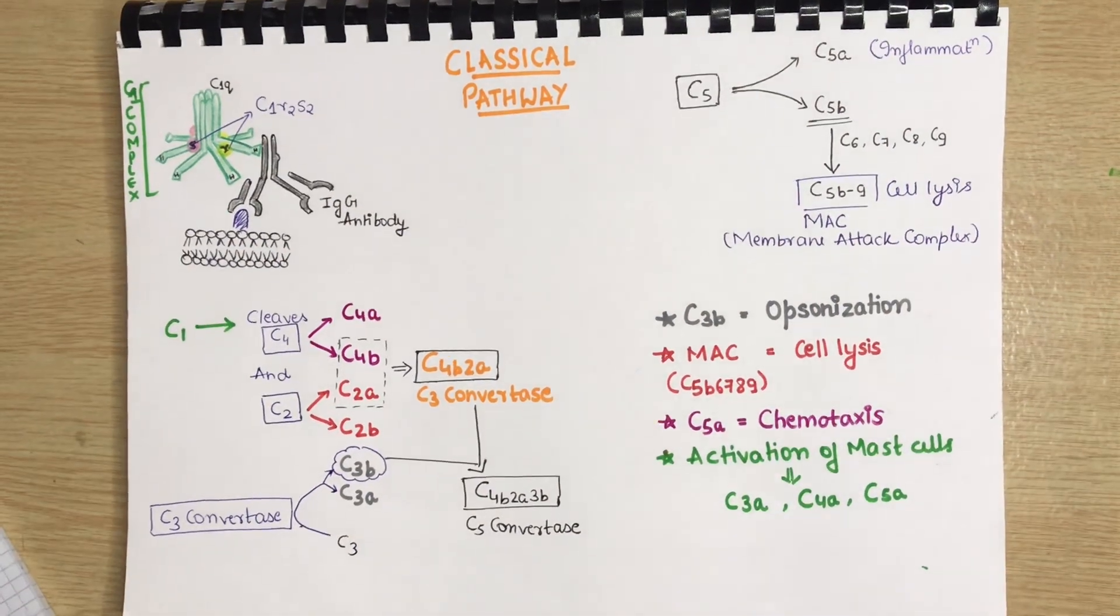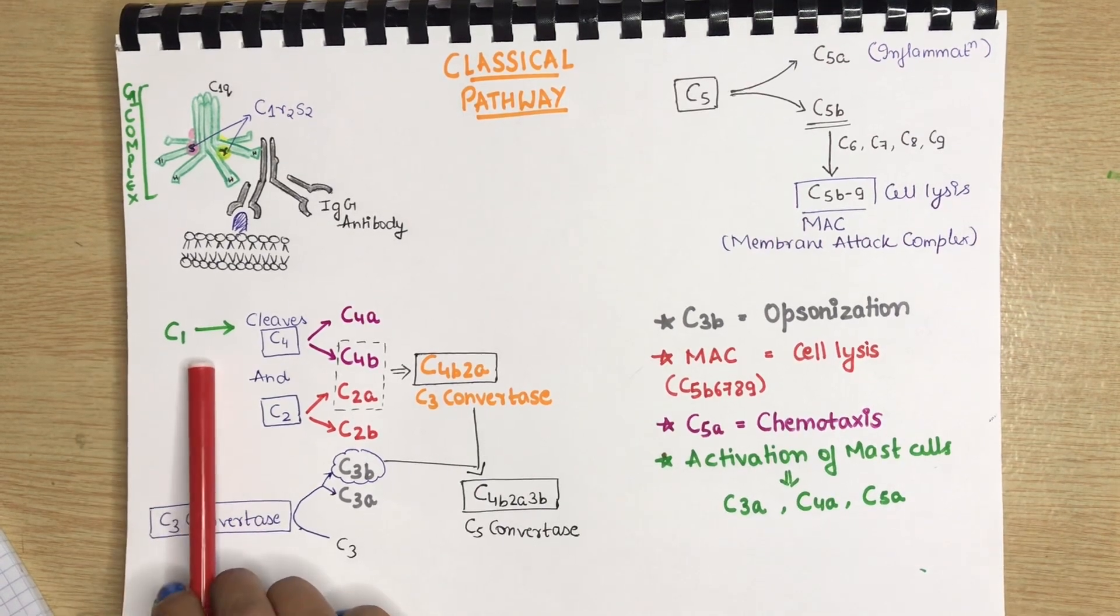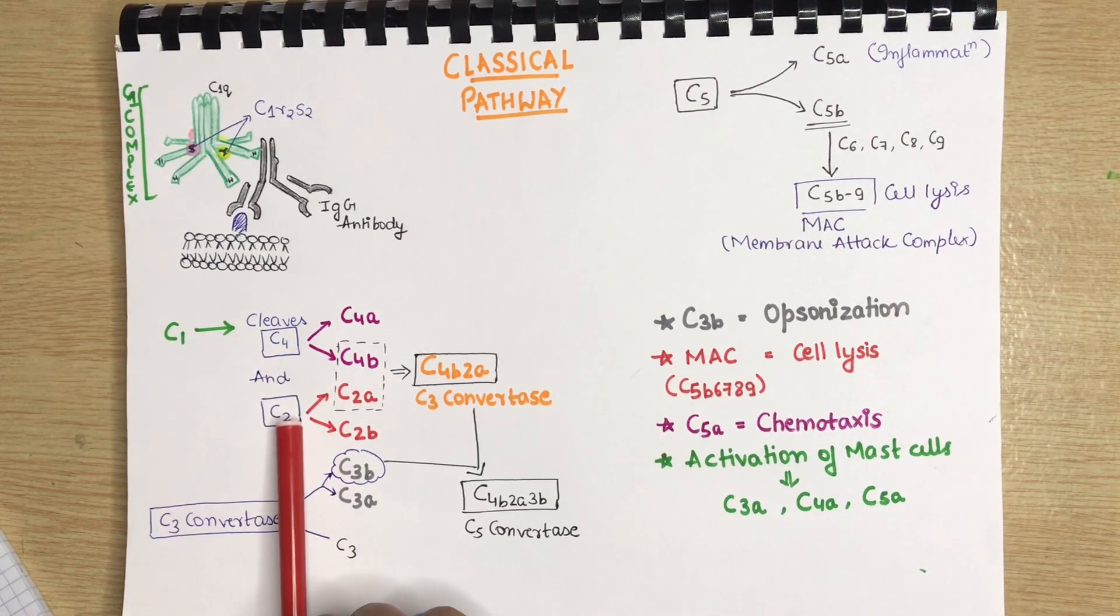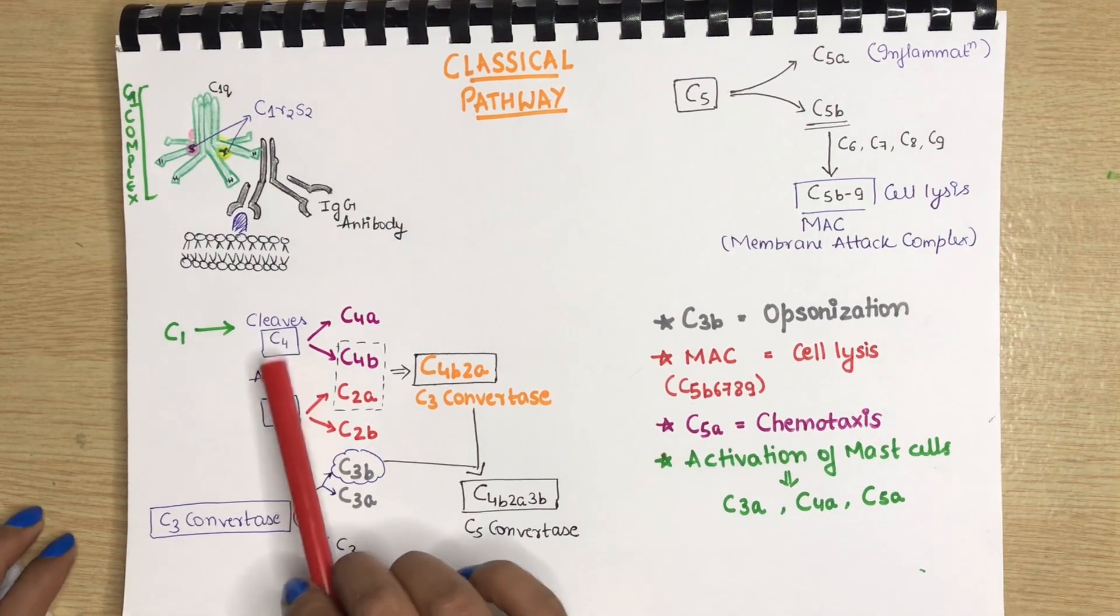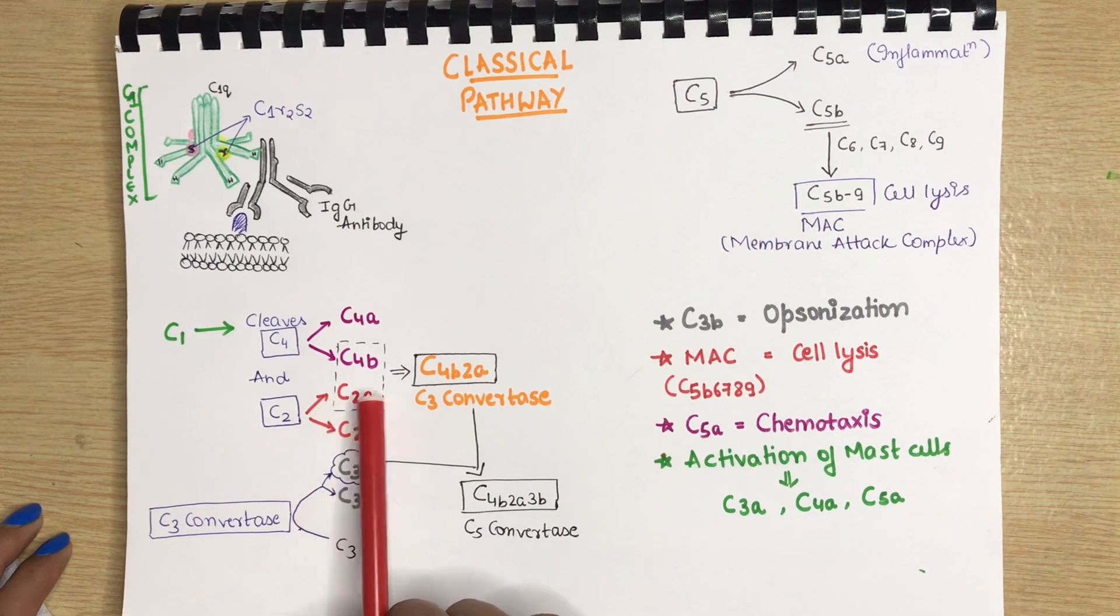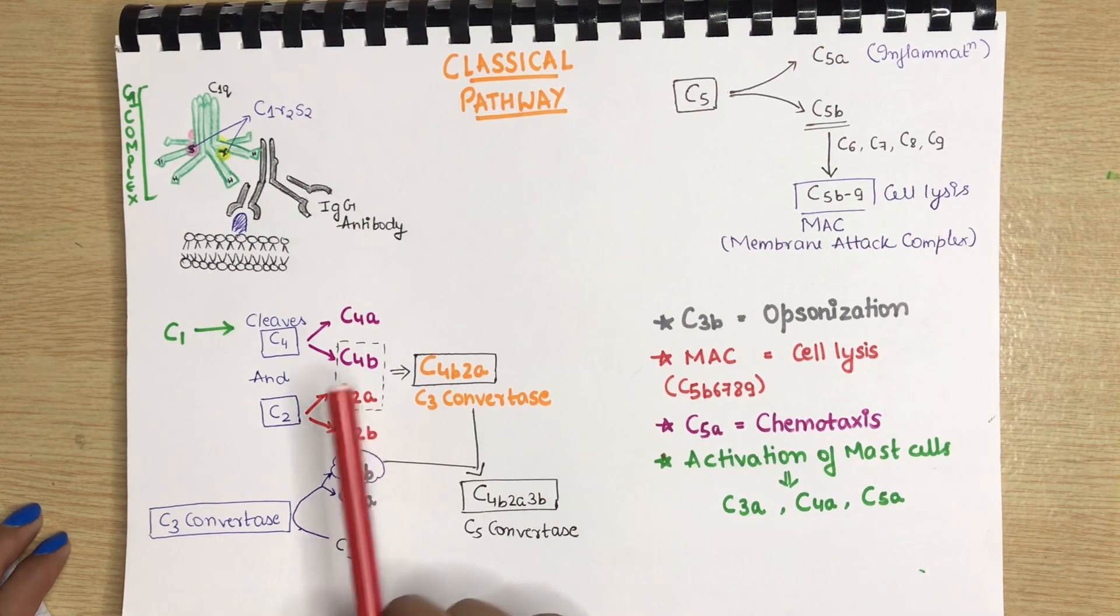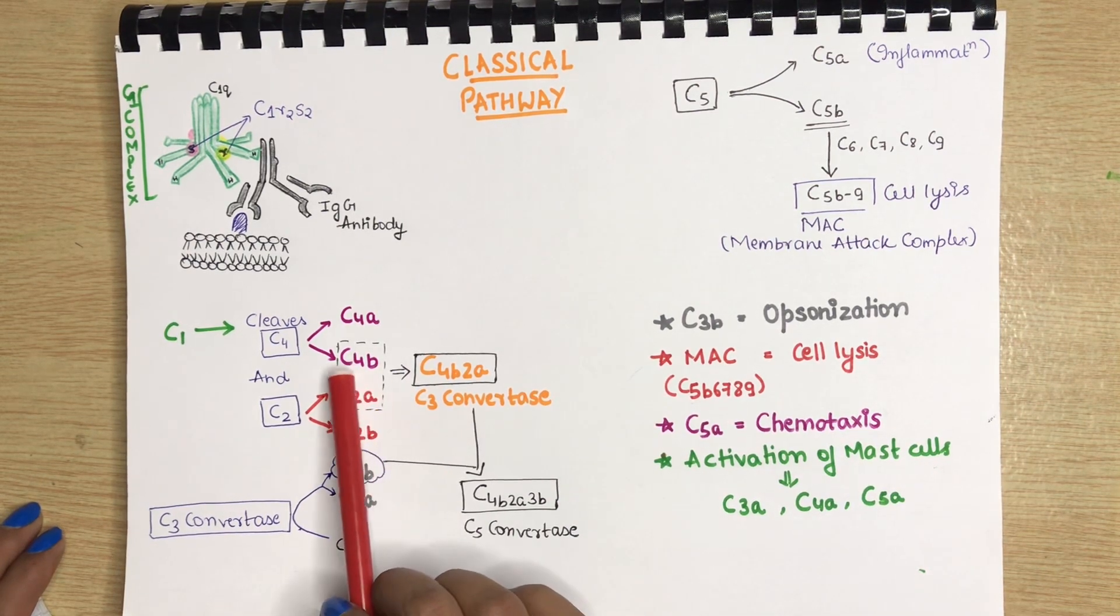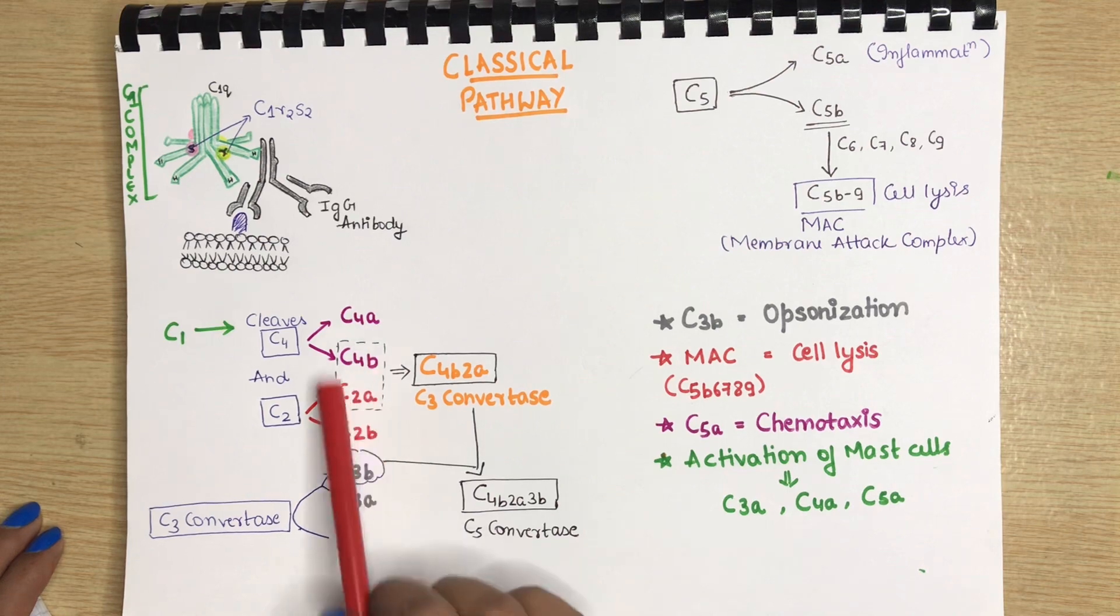What will it do after activation? The C1 once it is activated, it will cleave C4 and C2. C4 will be cleaved into C4A and C4B, C2 into C2A and C2B. As I told you earlier, in C2 part, the A part is larger and active. Hence, the C4B and C2A which are the active part, they will combine and form C4B2A which is known as C3 convertase.